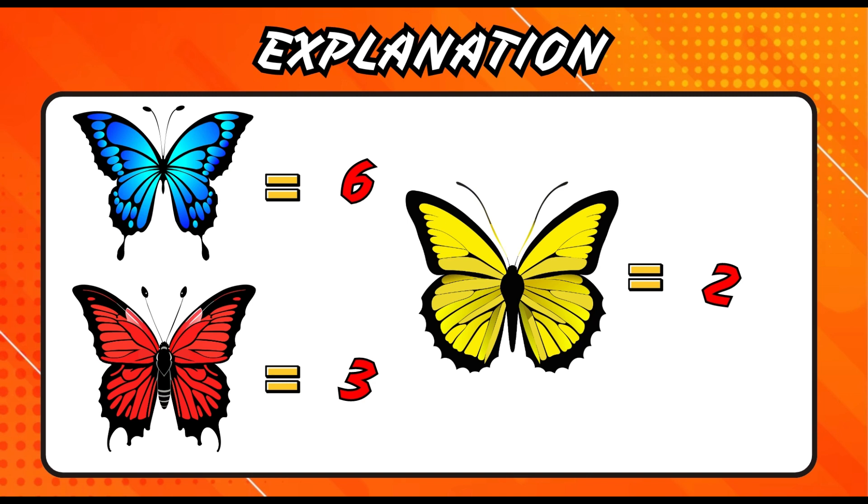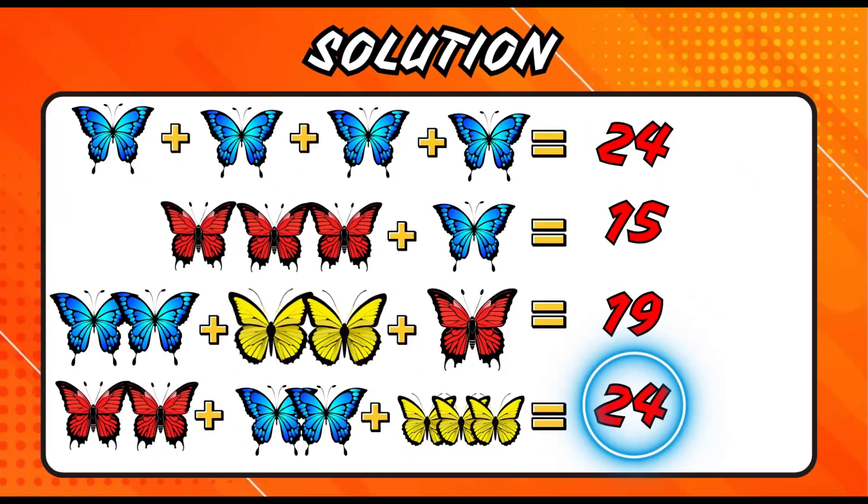Let me help you solve the equation. The red butterfly takes up the value of 3, while the blue is 6 and the yellow is 2. Now, with these values, calculate the answer. The right equation is 6 for red butterflies plus 12 for blue butterflies plus 6 for yellow butterflies. Therefore, the right answer is 24.